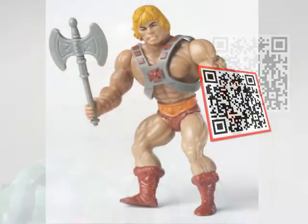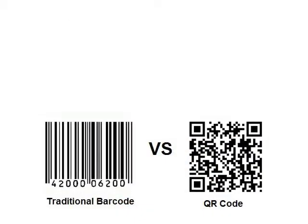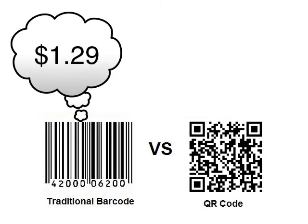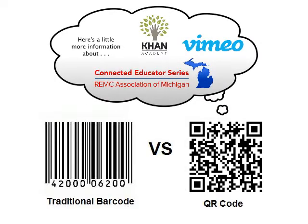Have you seen these before? They're called QR codes, and I kind of like to think of them as barcodes on steroids. Here's how QR codes work: just like barcodes link to information about stuff that you buy at the store, you can link QR codes to all sorts of different kinds of information — like text, pictures, videos, or even websites.